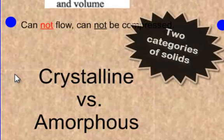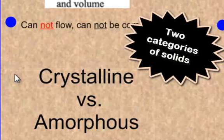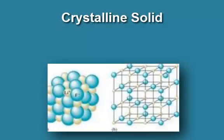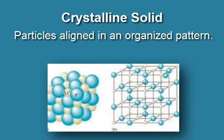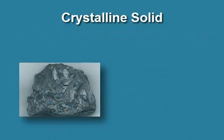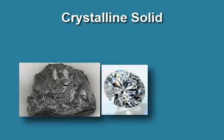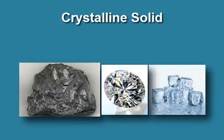There are two categories for solids: crystalline and amorphous. A crystalline solid is going to have all those tiny particles in the solid aligned in rows in some kind of pattern — a three-dimensional arrangement that is repeating. Iron would be an example of this. Diamonds would be an example. Ice would be an example. An aluminum baseball bat would be an example. The molecules are going to be very orderly.